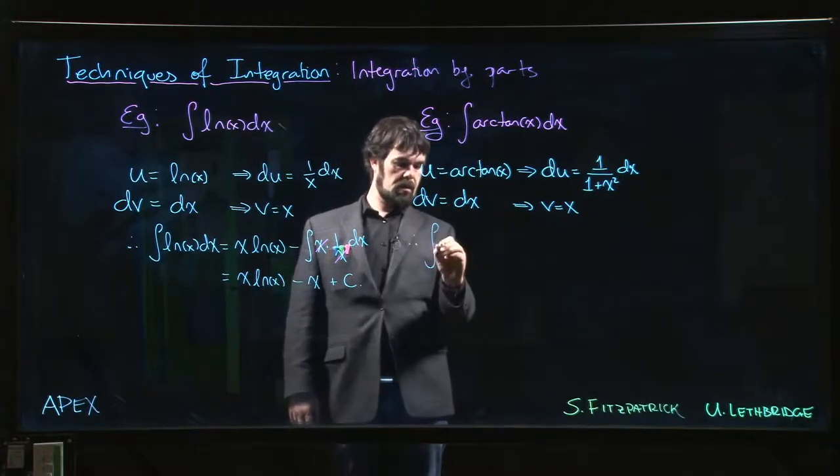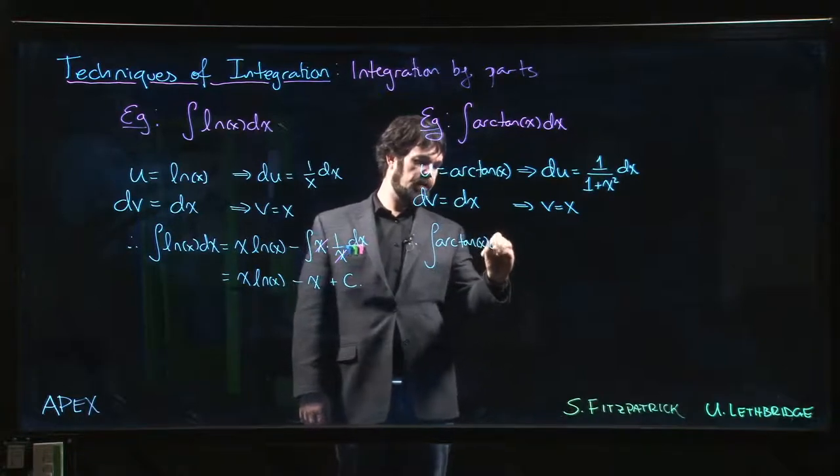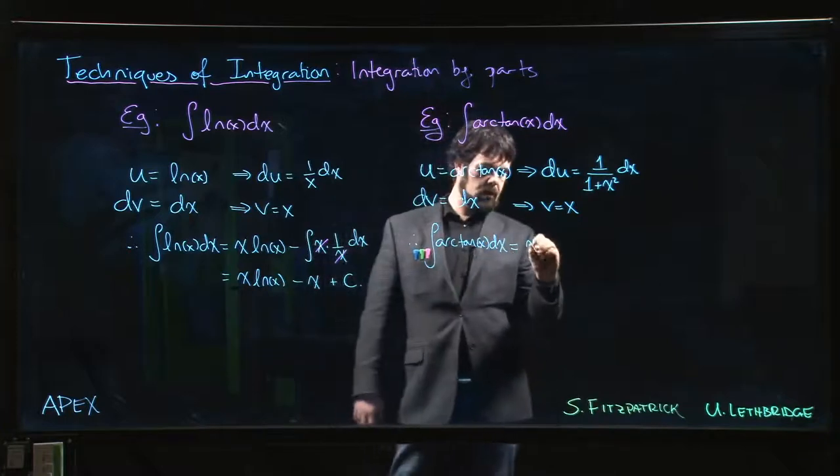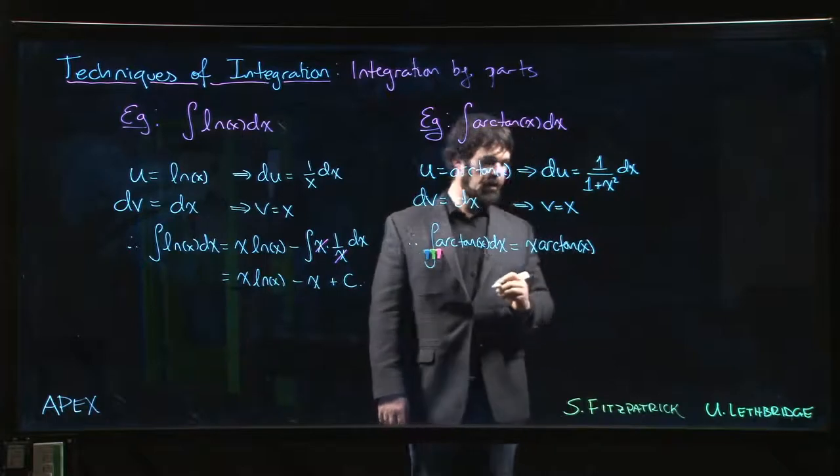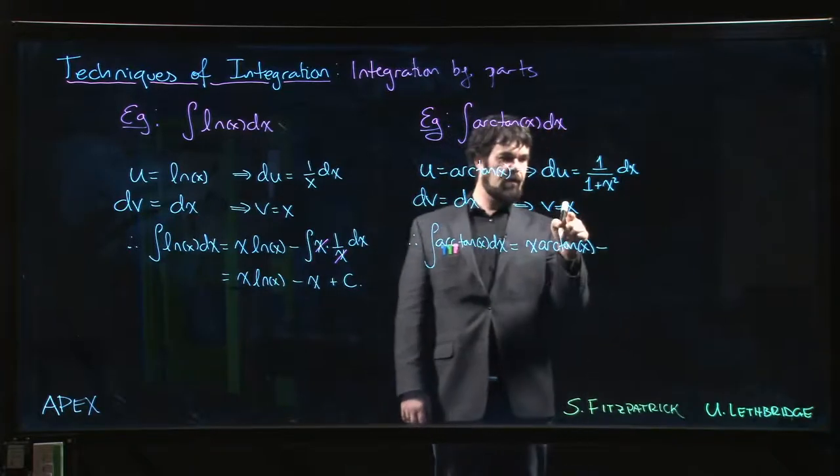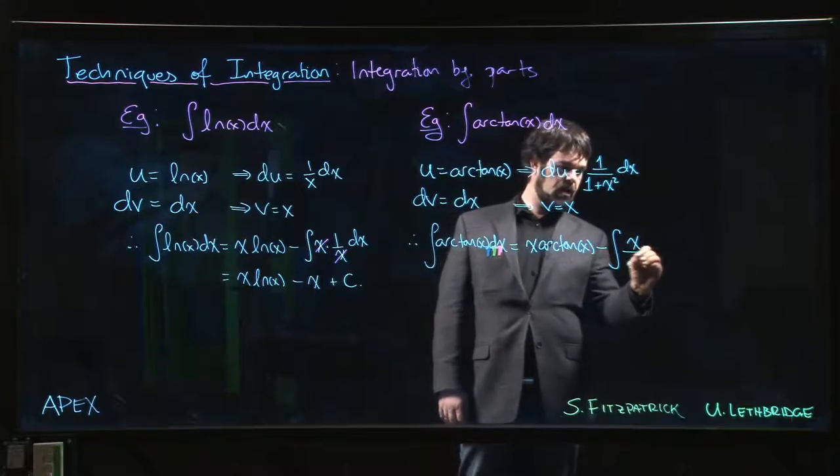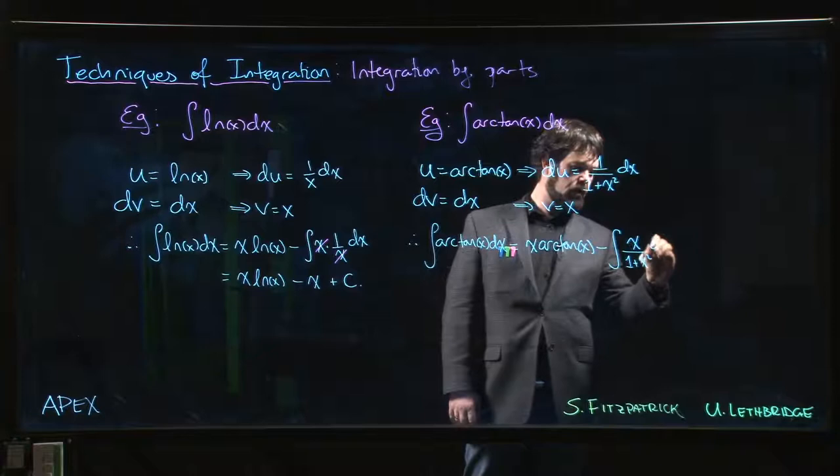So then antiderivative for arctan is going to be uv, x arctan x minus v du. So here's v, here's du.